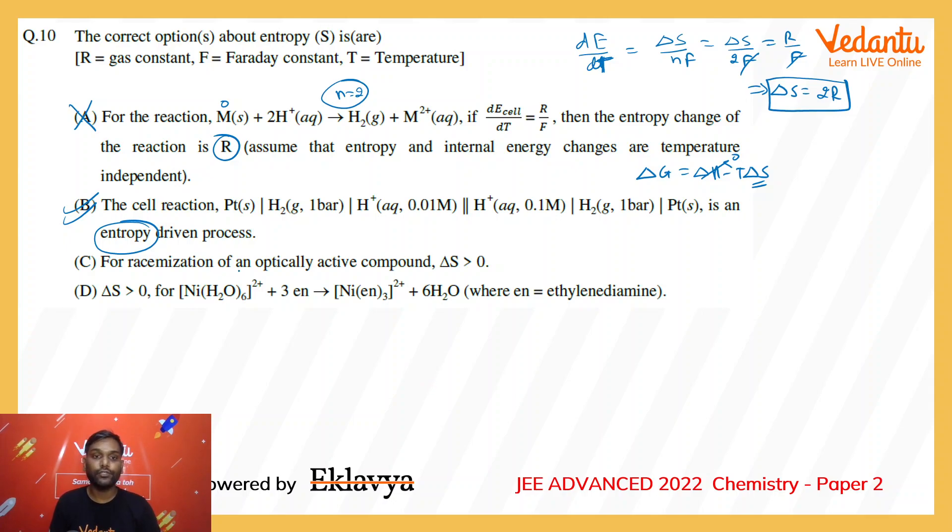Option C: For racemization of an optically active compound, ΔS is positive. In racemization, both enantiomers have the same types of bonds with no difference in bond energy. For example, a compound and its enantiomer have no difference in bond energy, so the ΔH value for this change would be zero. Just like the previous option, the only driving force for racemization is entropy increase, so option C is also correct.